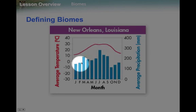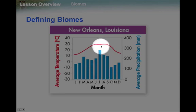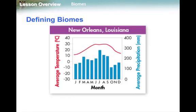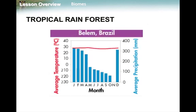Then we talk about the amount of rain you will get here. Notice that the most rainy month is July, with right around 300 millimeters of rain. The least rain is in October, at just 100 millimeters of rain. These two things together — temperature and precipitation — describe this biome.